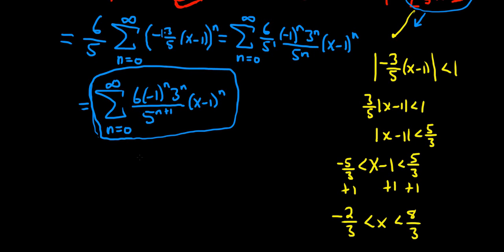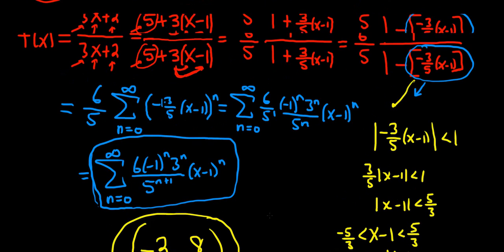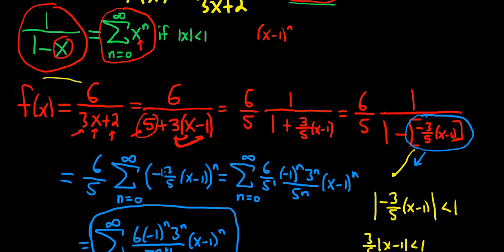So in interval notation, our interval of convergence will be negative 2 thirds to 8 thirds. And that should be the final answer. So it's a really elegant process, and it's worth mastering. If you study complex analysis, which is like the calculus of complex valued functions, you do see this again. This comes up in the study of something called Laurent series. So this is a reoccurring idea, and it really is a beautiful technique once you understand it. Let me just go through it really quickly one more time.